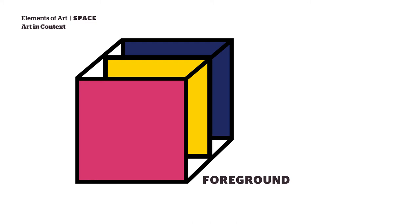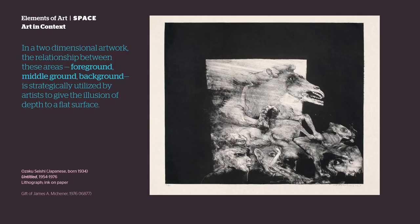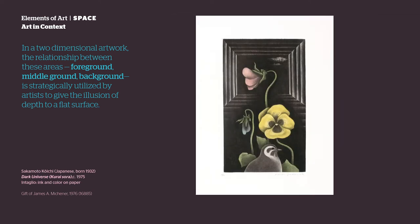Foreground, middle ground, background. In a two-dimensional or flat artwork, the relationship between these areas — foreground, middle ground, background — is strategically utilized by artists to give the illusion of depth to a flat surface.